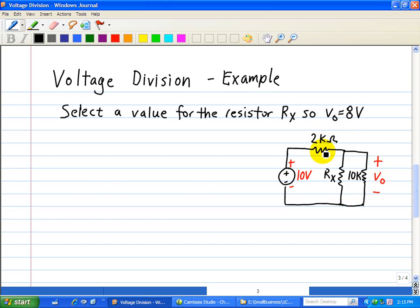We have a 2 kilo ohm connected in series to this parallel combination. So first we note that we have an R equivalent here. R equivalent is equal to the product of those two resistors, 10 kilo ohm, divided by the sum of those two resistors, Rx plus 10k.